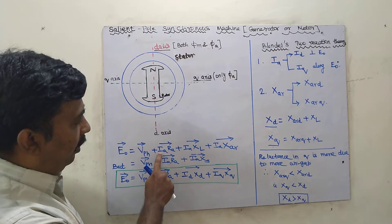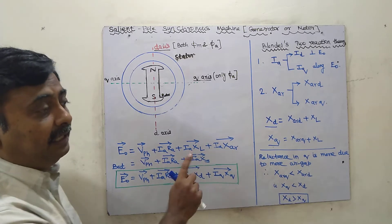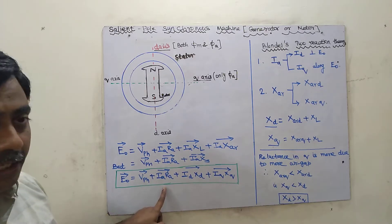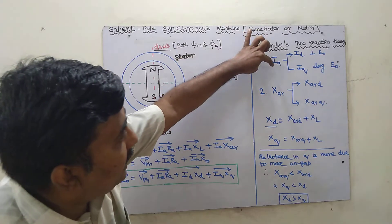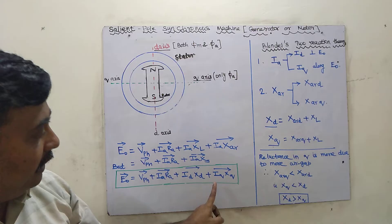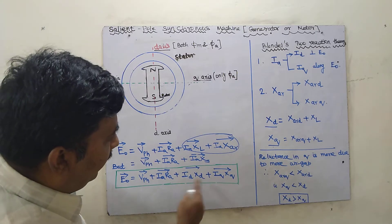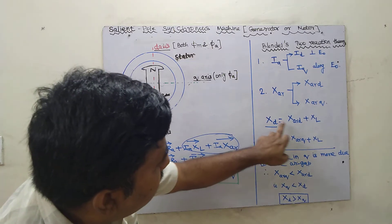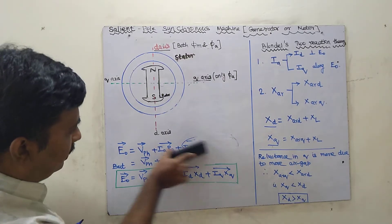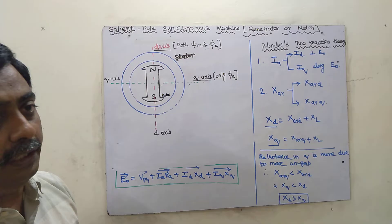The general formula for non-salient pole alternator is: E0 = V-phase + IA·RA + j·IA·XS. But this is not applicable for salient pole alternator. For salient pole, we divide the current into two parts — ID and IQ — and write: E0 = V-phase + IA·RA + j·ID·XD + j·IQ·XQ. XD consists of leakage reactance plus armature reaction reactance in the D-axis, and XQ similarly. From this equation, we find E0.